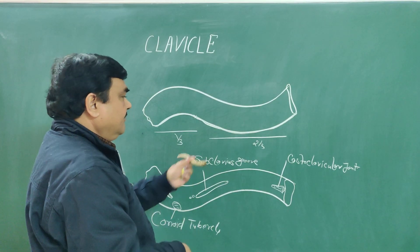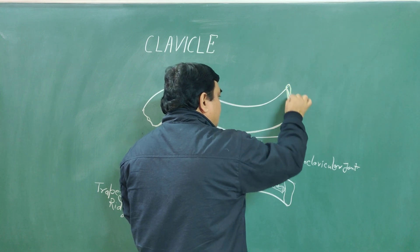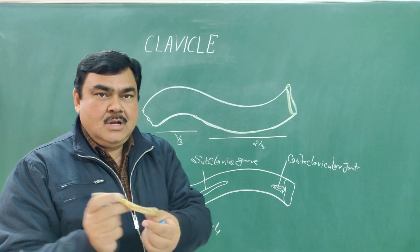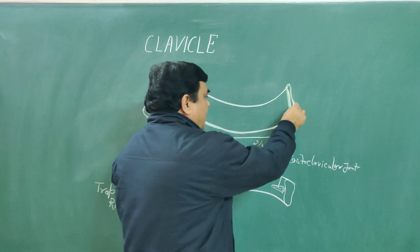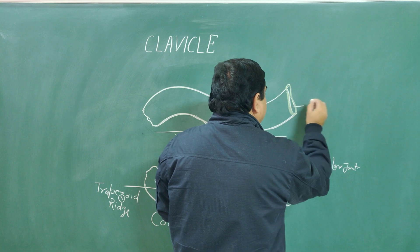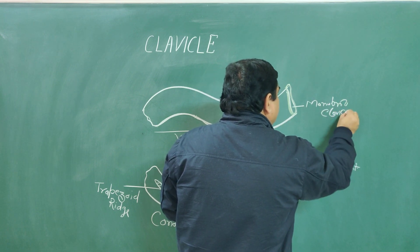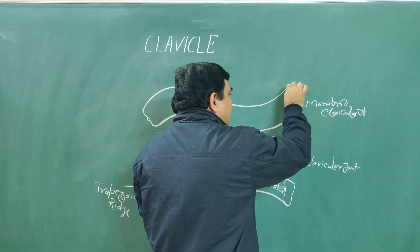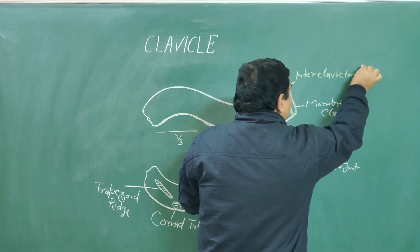Now, the attachments. On the medial side, there is attachment of the fibrous capsule along the joint margin. The joint formed between the clavicle and manubrium is the sternoclavicular joint, and an articular disc is also present here. Interclavicular ligaments are also attached here.